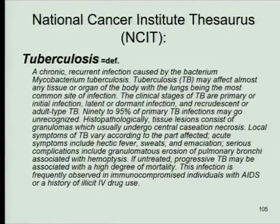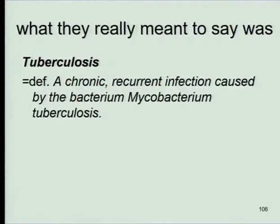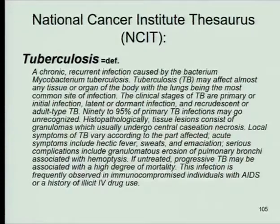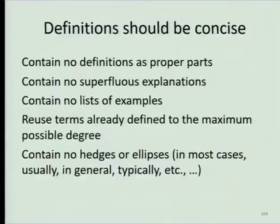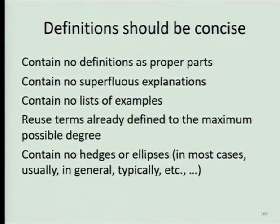Definitions should be concise. This is the National Cancer Institute Thesaurus definition of tuberculosis — what they really meant to say is a much shorter definitional part. The rest is just chatter. It's not part of the definition to know that 90 to 95% of primary TB infections may go unrecognized — that is just chatter. To be concise, you shouldn't have any definitions as proper parts. You should reuse terms which have already been defined, and you shouldn't build in superfluous explanations or encyclopedic knowledge. You should just define what is logically needed to specify the jointly sufficient and individually necessary conditions for being an instance of that thing — no examples, no ellipses, no 'usually' or 'in general.'